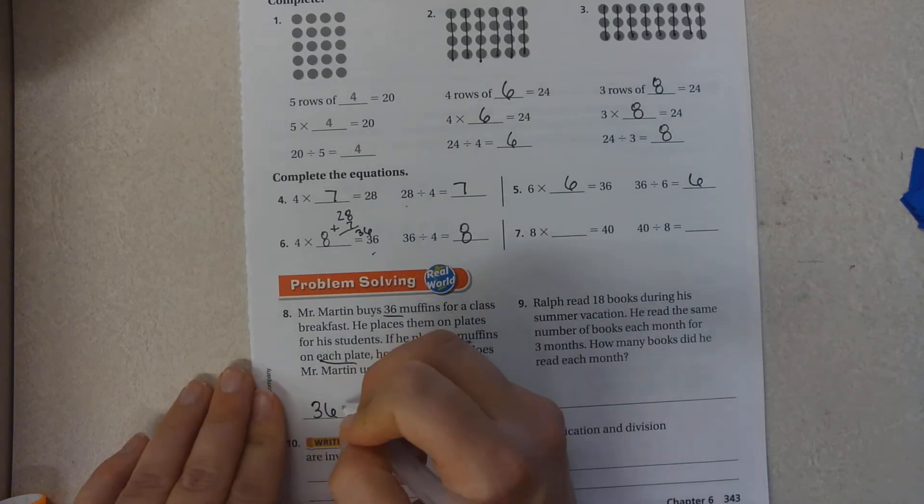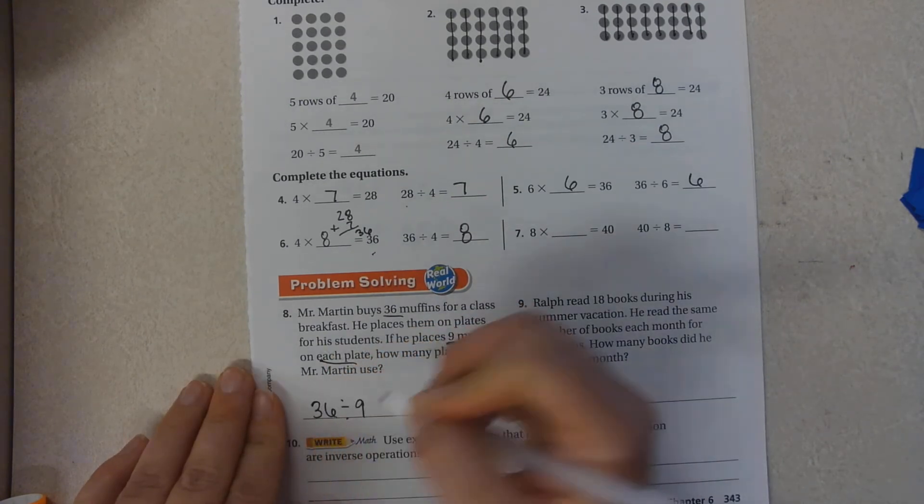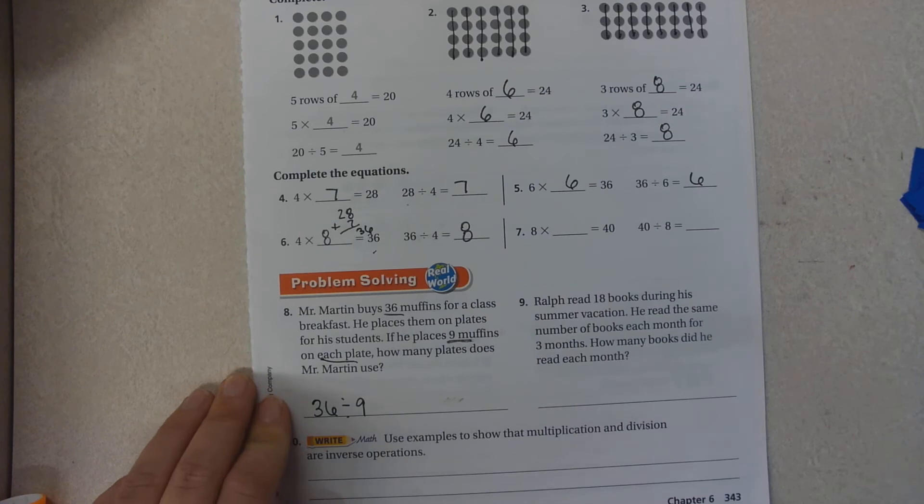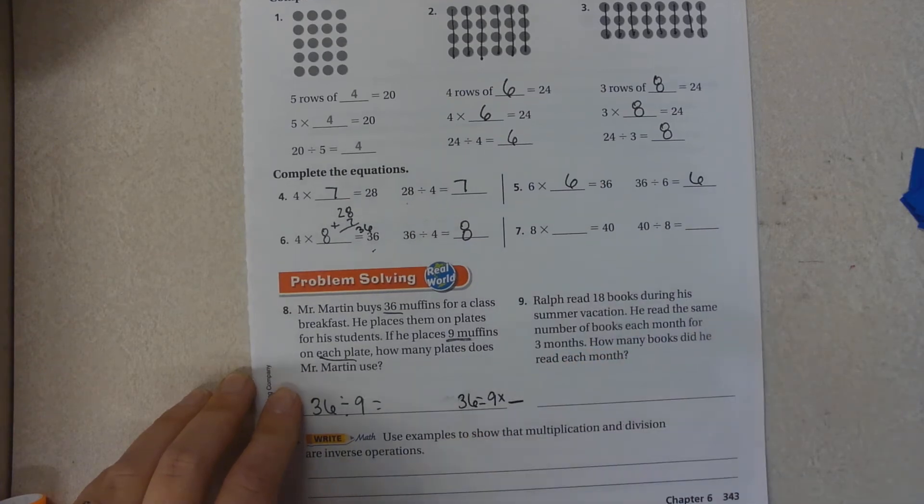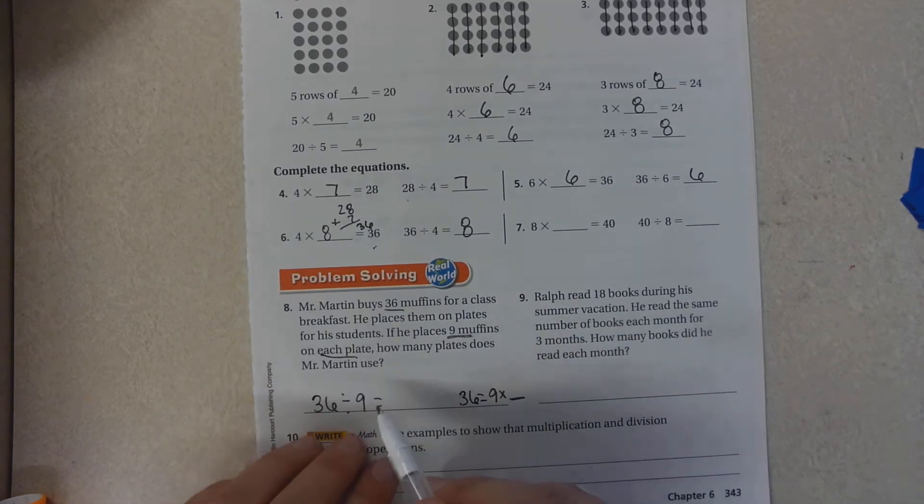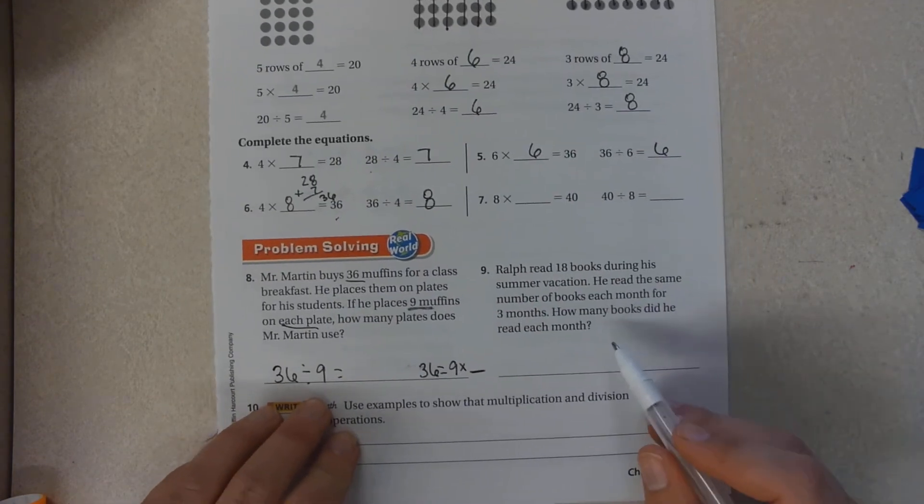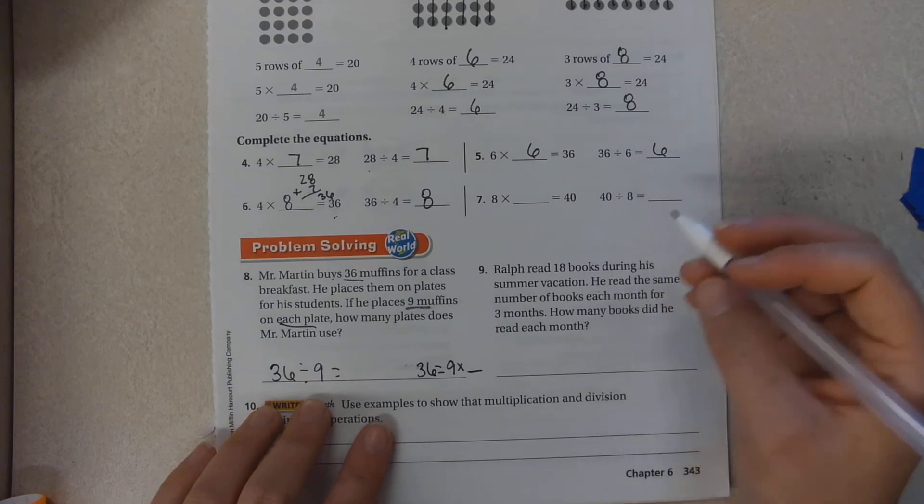So we're going to do 36 divided by 9. How many plates does Mr. Martin use? Or you can write 36 is equal to 9 times something. I will let you solve that.